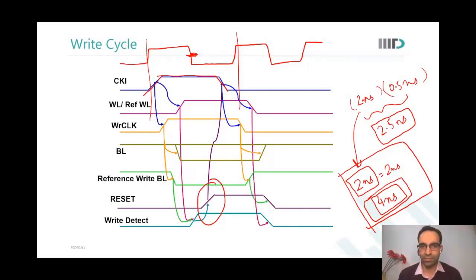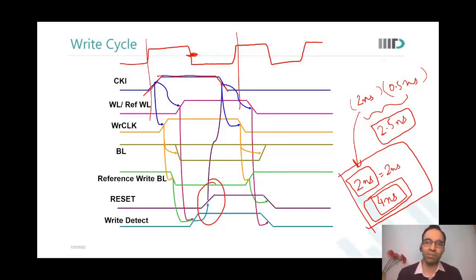Write detect must come when the write operation has been successfully done for all the bits — a word could be 32 bits and it has to be all of them. So write detect must come after the worst-case cell has been written into. Just as when writing your name 100 times, you cannot predict which one will be the worst. The worst bit cell determines the required write time.